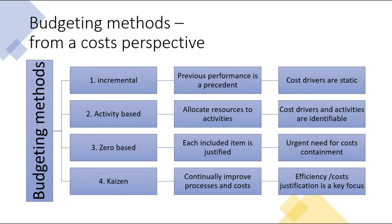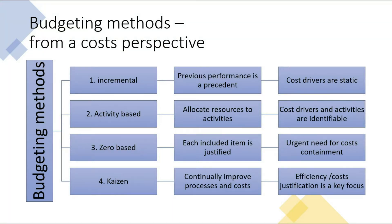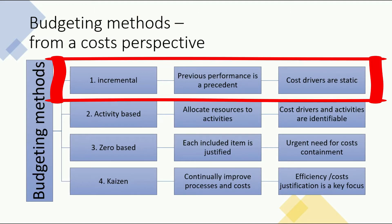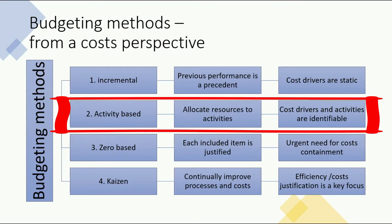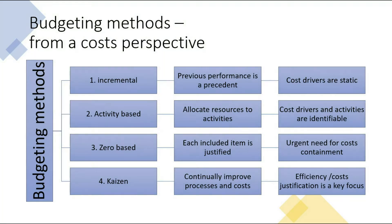These budgeting methods can be looked at from different perspectives. I'm going to look at them from a cost perspective here. Incremental budgeting method looks at previous performance as a precedent. It's useful when cost drivers are static. Activity-based budgeting method allocates resources to activities. It's useful when cost drivers and activities are identifiable.